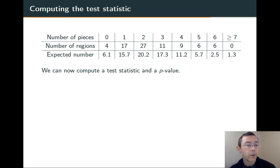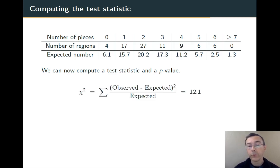Now we can compute a test statistic. So we do observed minus expected, square it, divide by expected for each of these categories. And add all those up and we get a chi-squared value of 12.1.